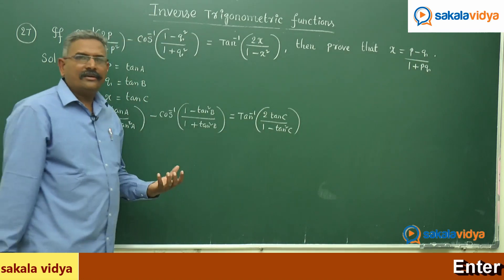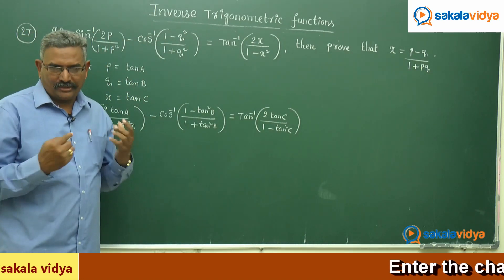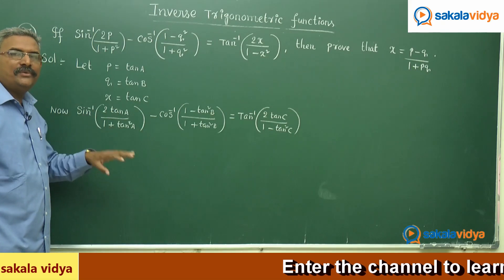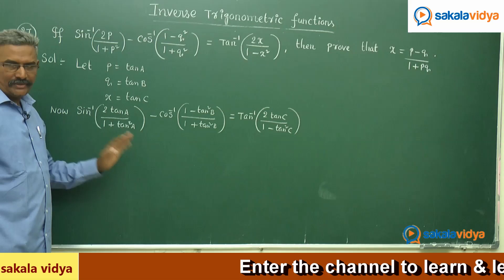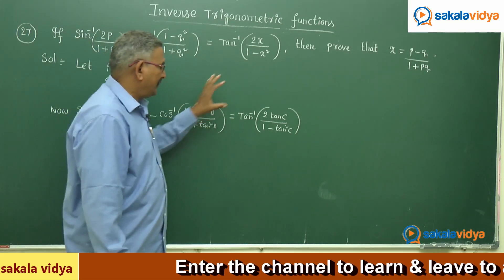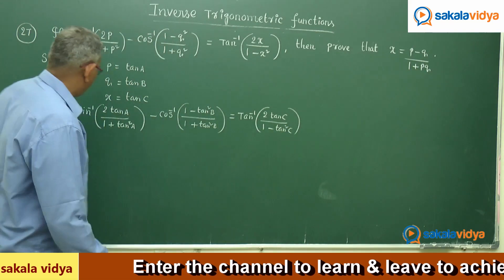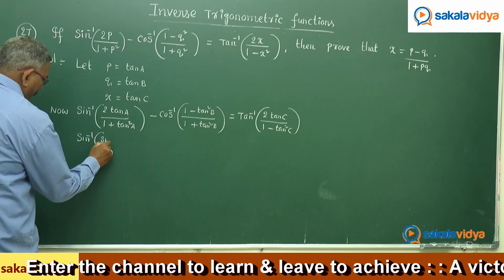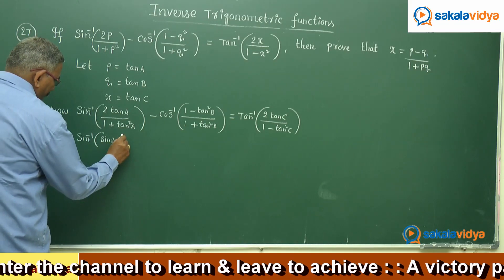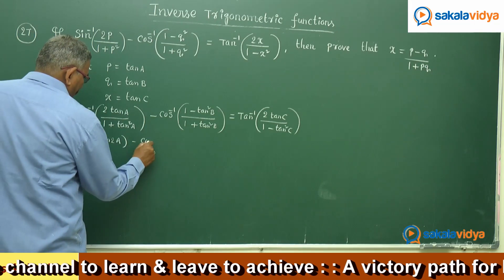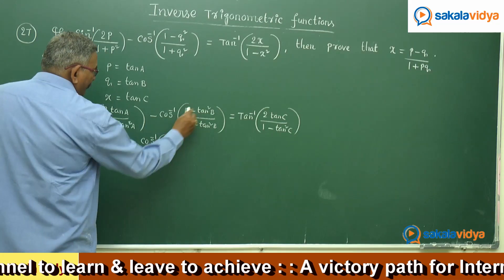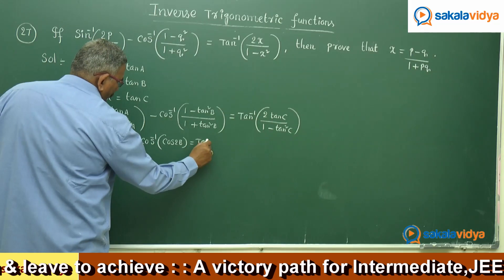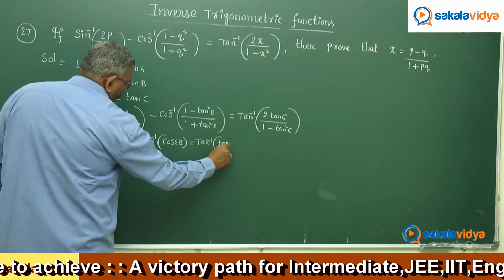Let us recall the sub-multiple angle formulae. 2 tan a/(1 + tan²a) is the value for sin 2a. And (1 - tan²b)/(1 + tan²b) is cos 2b. And 2 tan c/(1 - tan²c) is tan 2c. Now let us replace the values: sin⁻¹(sin 2a) minus cos⁻¹(cos 2b) equals tan⁻¹(tan 2c).